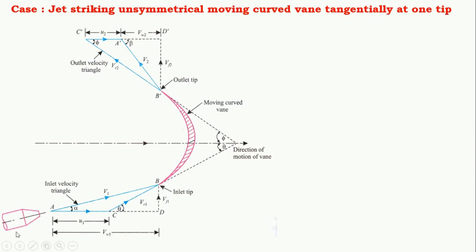The figure shows that jet of water striking a moving curved plate tangentially at one of its tip. As the jet strikes tangentially, the loss of energy due to impact of jet will be zero. As the plate is moving, the velocity with which the jet of water strikes is equal to the relative velocity of the jet with respect to the plate. As the direction of jet velocity and vane velocity is not same, the relative velocity at the inlet will be the vector difference of the jet velocity and plate velocity at inlet.